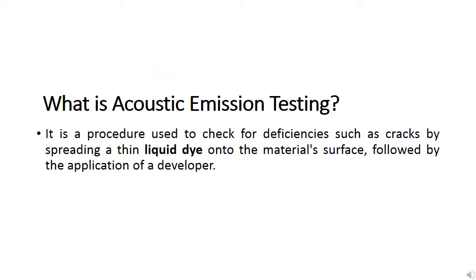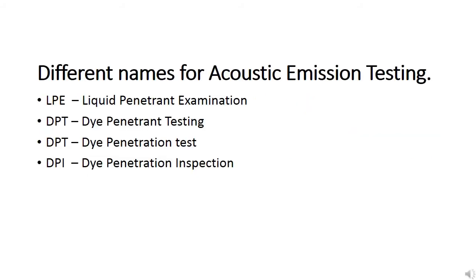We will start with what is acoustic emission testing. It is a procedure used to check for deficiencies such as cracks by spreading a thin liquid dye onto the material surface, followed by the application of a developer. You will see different names for it: LPE (liquid penetrant examination), DPT (dye penetrant testing), DPT (dye penetration test), and DPI (dye penetration inspection).